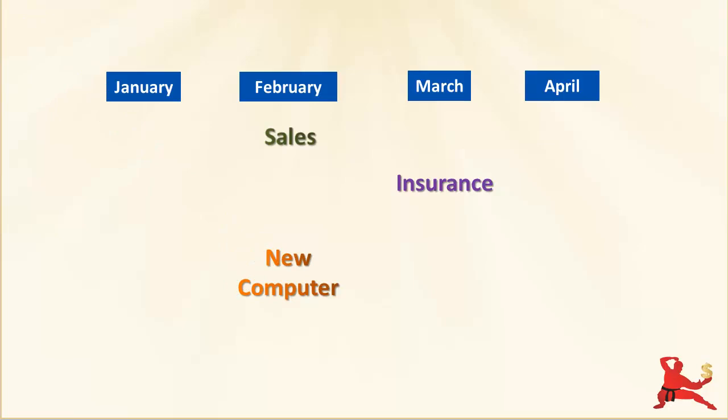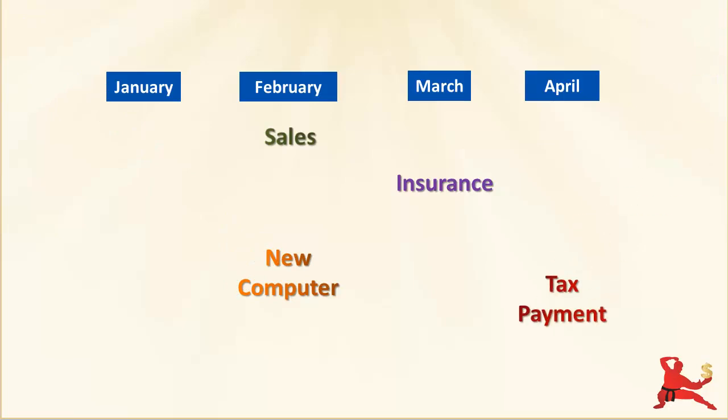And then they start to slot in payments for things like equipment purchases, tax payments and so on. So it's a profit and loss budget fudged into a cash flow.